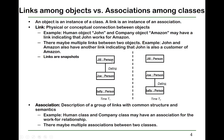For example, here we have three personal objects. At time instance T1, Jill and Joe have a link of dating. At time T2, Joe and Sally have a link called dating. An association describes a group of links with common structures and semantics.